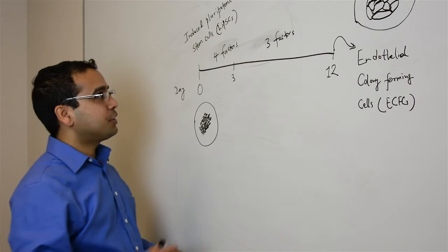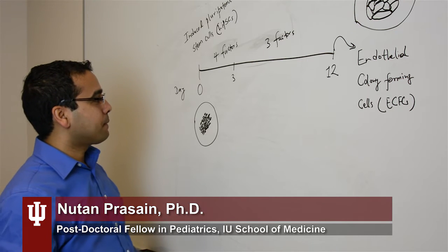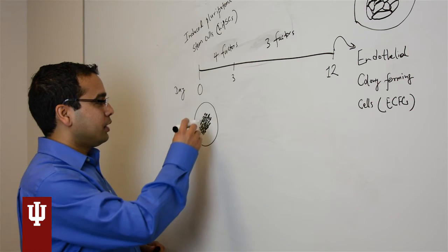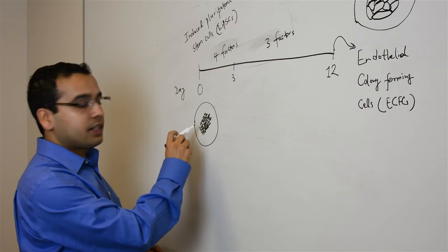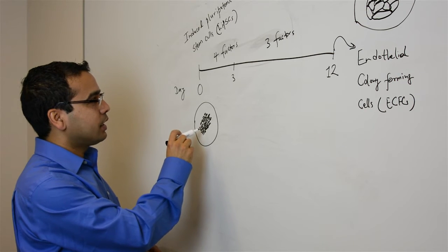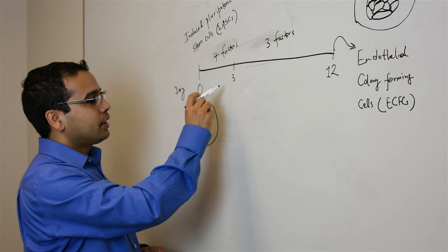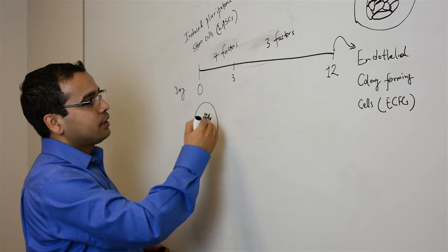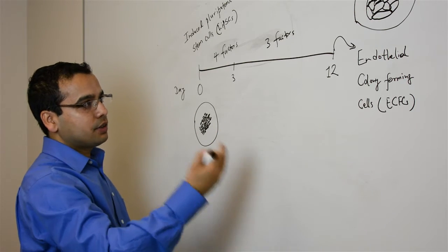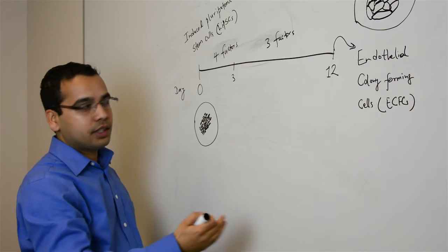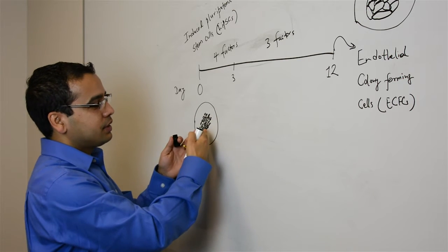We took these induced pluripotent stem cells that we derived in the lab. They look in the culture like this with these smaller cells, and they indefinitely divide. We coax these cells with four factors initially for three days, and then in a stepwise manner in the next nine days, we change media, we change growth factors, combination and concentration, so that we get a stepwise differentiation of these cells.